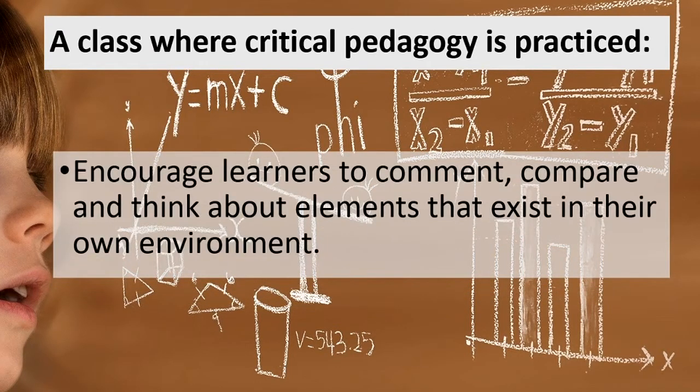In such classes, learners should be encouraged to comment, compare, and think about various elements existing in their own environment. In most science classrooms, what is taught is not connected with students' immediate surroundings. So if you want to develop critical skills, you should provide opportunity to find elements from their surroundings, comment on them, relate and compare them with the theory and practices taught in science class — only then can you develop your learner as a critical thinker. So the question is: what is critical pedagogy?